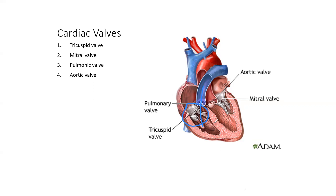On the opposite side you'll find the mitral valve, which separates the left atrium from the left ventricle. Same concept — when the atrium contracts, the valve opens to drain blood into the ventricle. When the ventricle contracts, it sends the blood out to the aorta to the neck and the rest of the body. There is also the pulmonic valve — between the right ventricle and the pulmonary artery — and the aortic valve, between the aorta and the left ventricle.